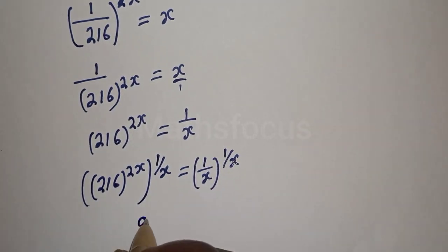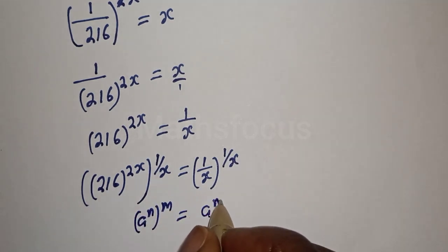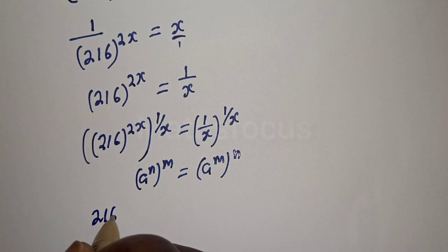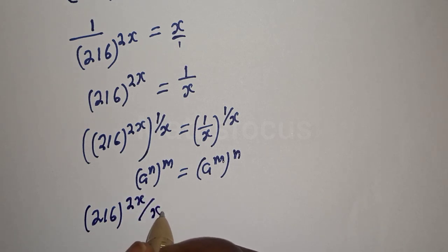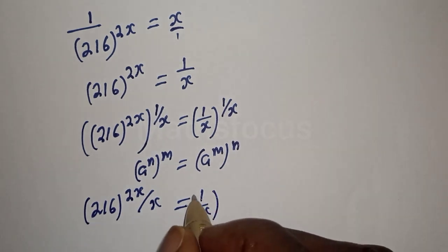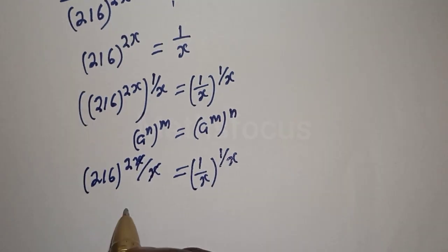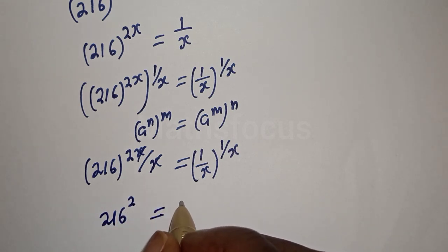If you have a raised to power n, to the power of m, this is equal to a raised to power m to the power of n. Applying this rule, we get 216 raised to power 2x over x, is equal to one over x to the power of one over x. The 2x over x simplifies: this cancels, giving us 216 squared.